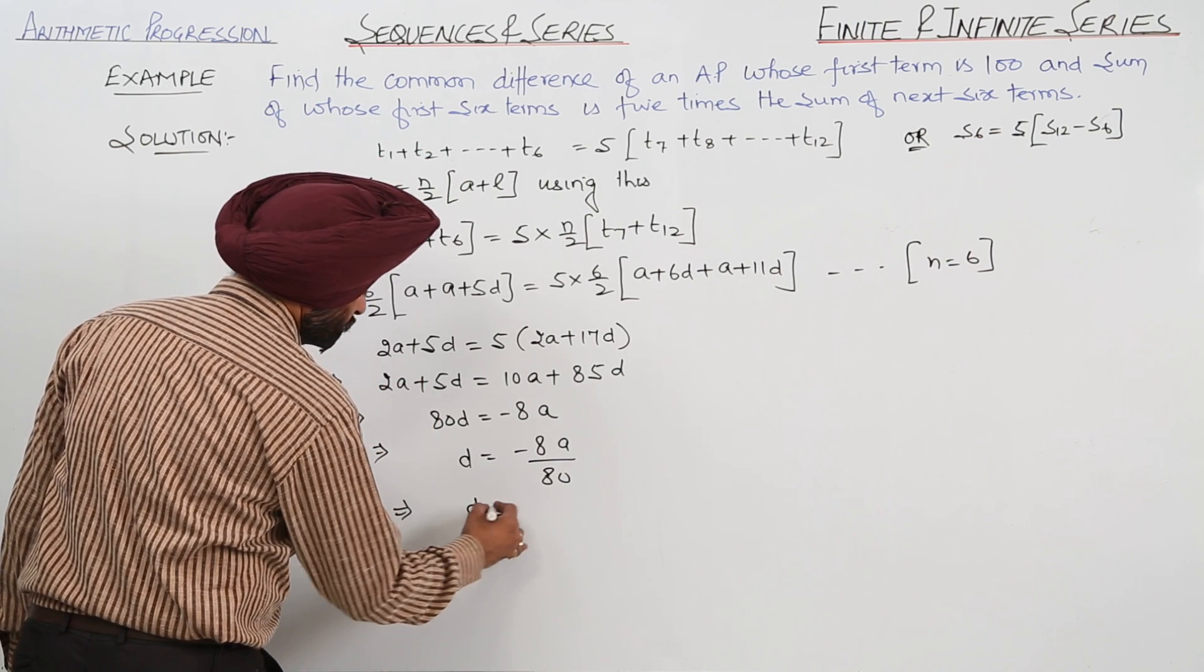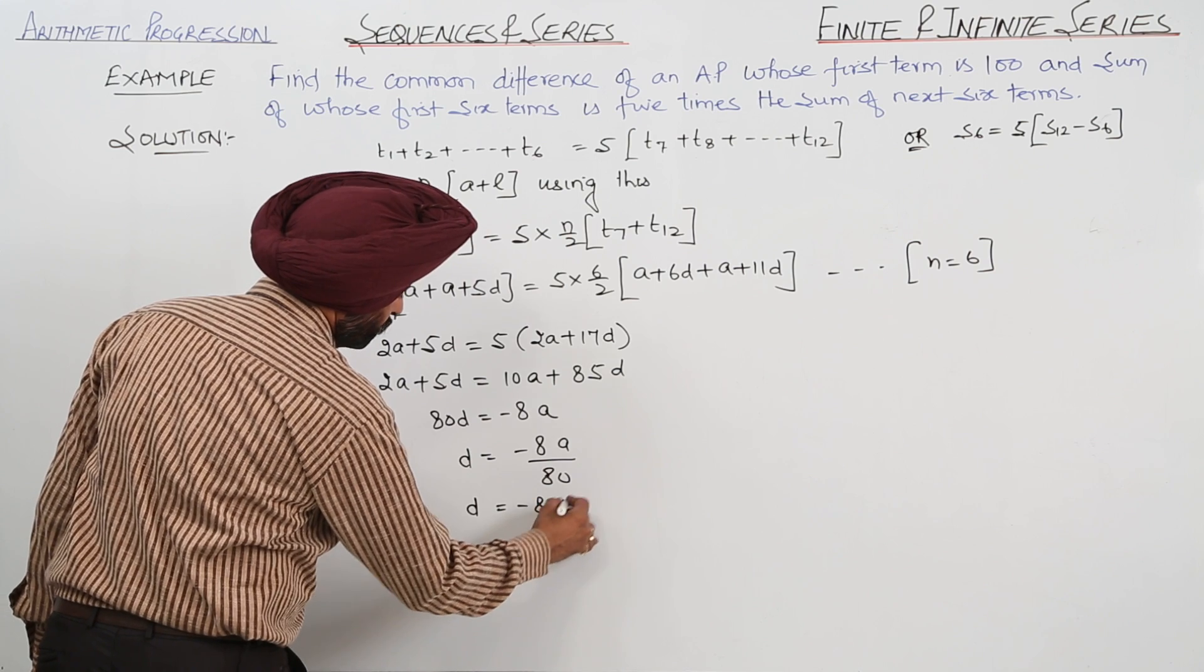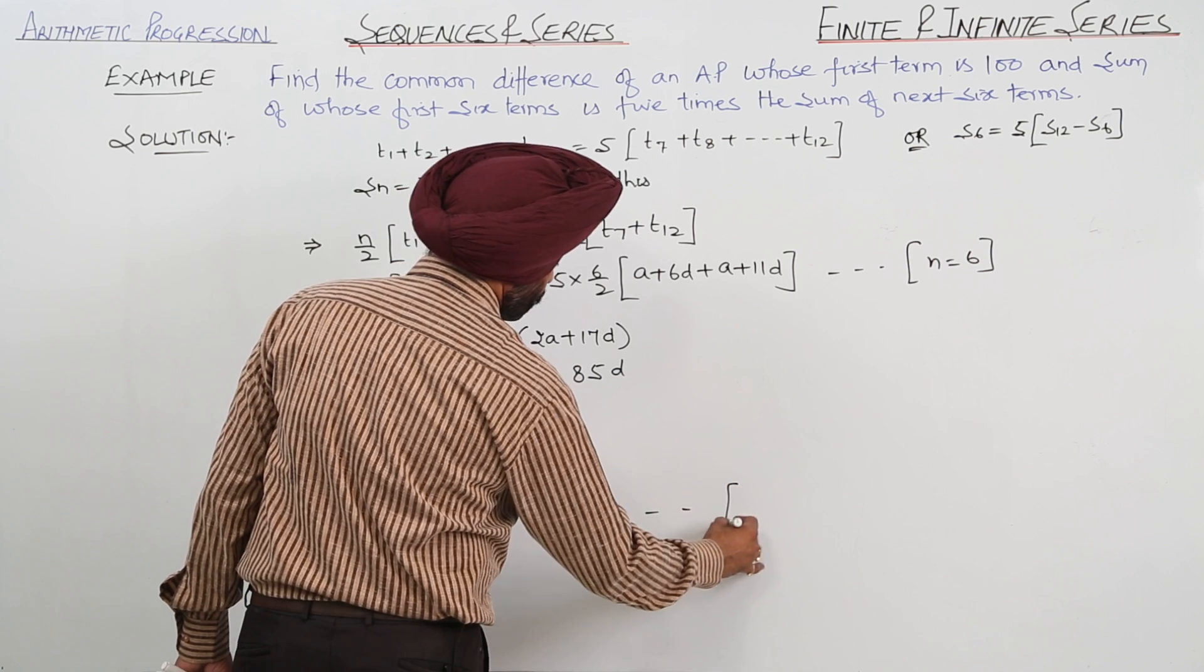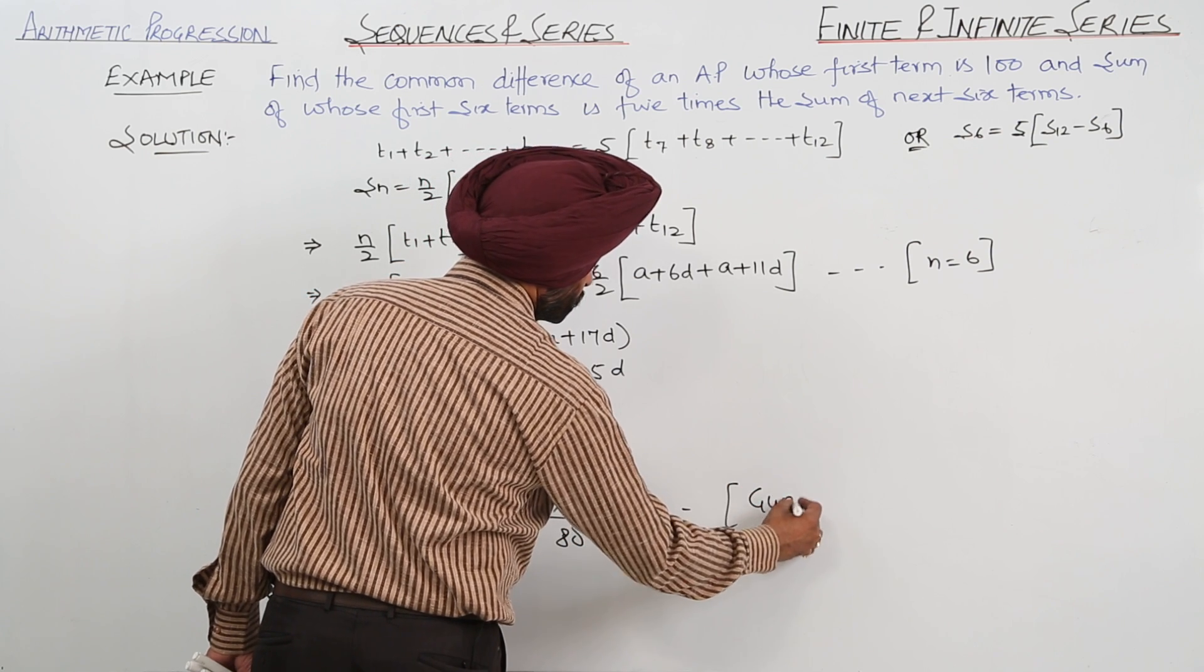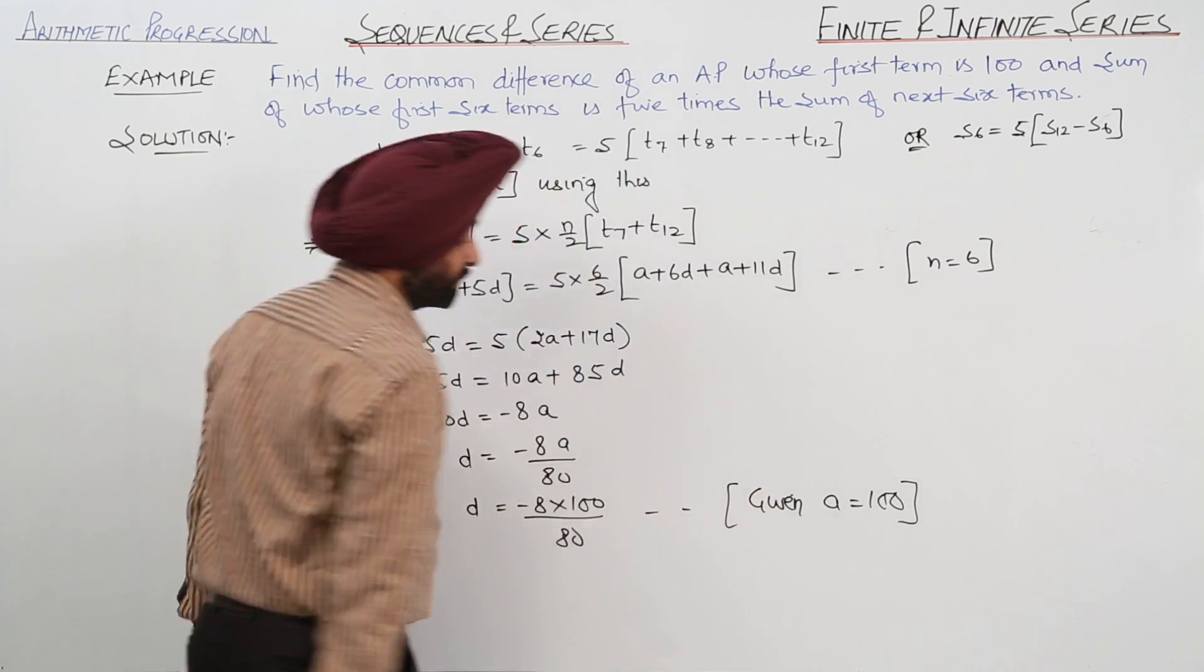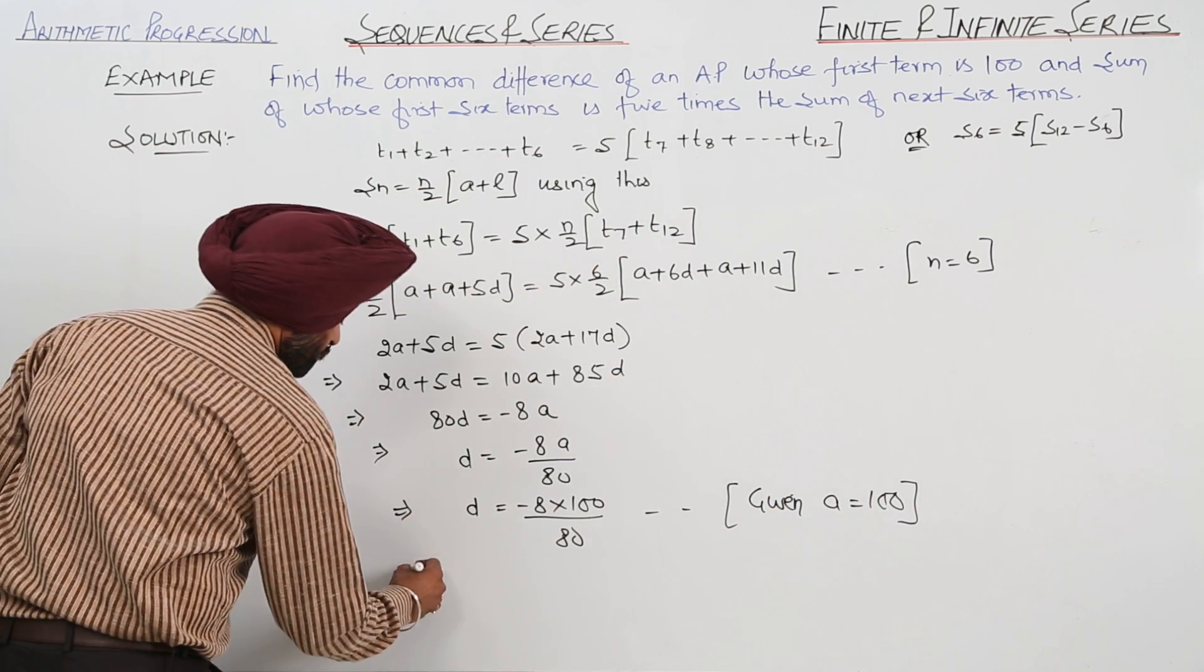Now let's put the value. D is equal to negative of 8 with 100 upon 80. Given, first term, that is A. A is what? A is 100. This is given to us, A is 100. So what is D?